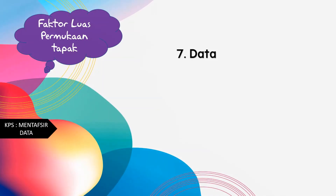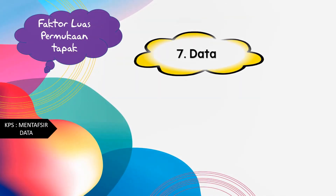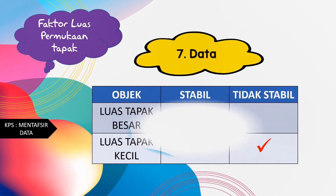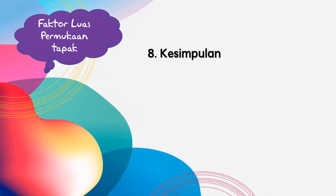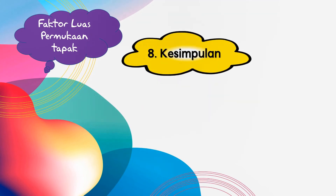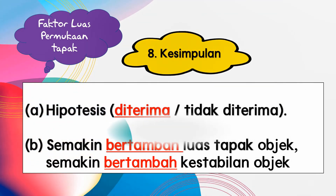Data yang kita tulis di sini ialah luas tapak besar adalah stabil, manakala luas tapak kecil tidak stabil. Kesimpulannya, hipotesis diterima, iaitu semakin bertambah luas tapak objek, semakin bertambah kestabilan objek.